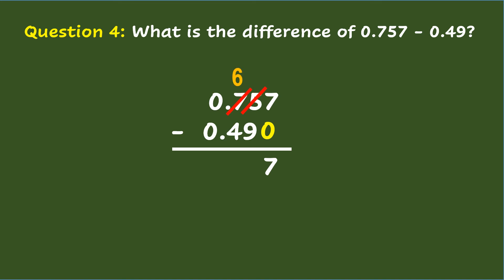You will regroup the one tenth that you borrowed to the hundredths place, so five in the hundredths place will become fifteen hundredths. Continuing in the hundredths place: fifteen minus nine equals six. Finally, bring down the zero and decimal point in the answer. So the final answer is zero and two hundred sixty-seven thousandths.